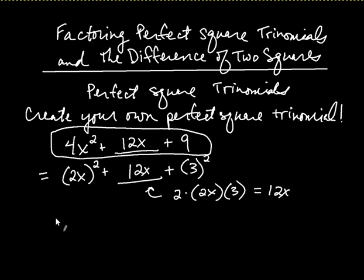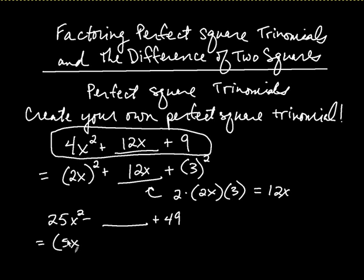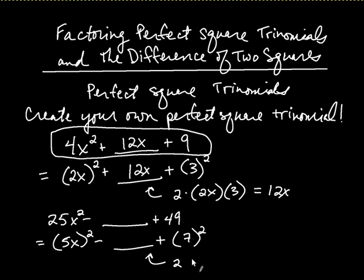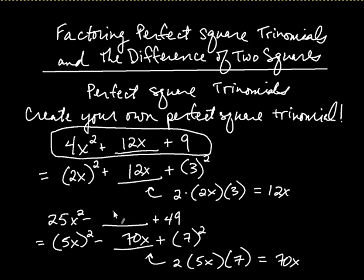Let's try another one. How about 25x squared minus blank plus 49? The same game — you identify what it is that you're squaring on the ends. So 5x quantity squared, and then what do I square to get 49? That's going to be 7. What goes in the middle is always 2 multiplied by — in this case — the 5x multiplied by the 7. When I multiply all these together, I get 10x times 7, which is 70x. So I put 70x right there in the middle, and I have created my very own perfect square trinomial.